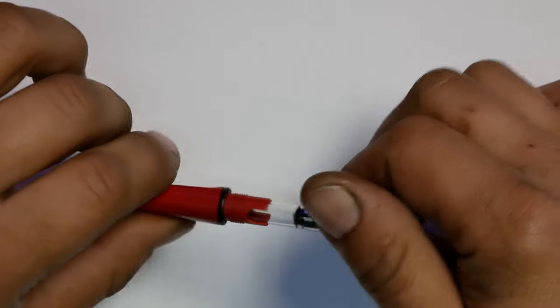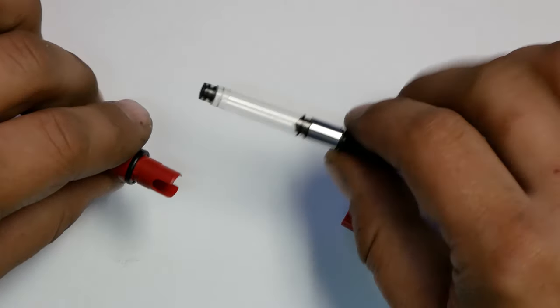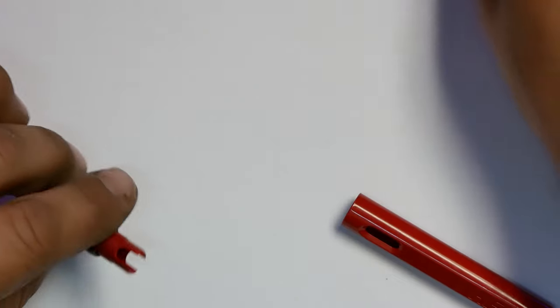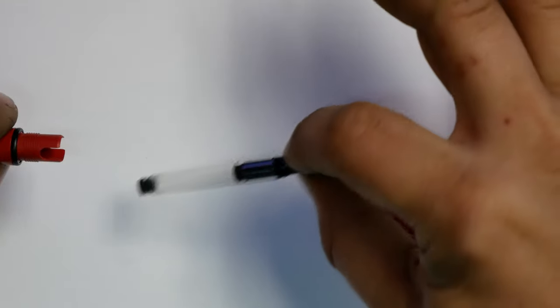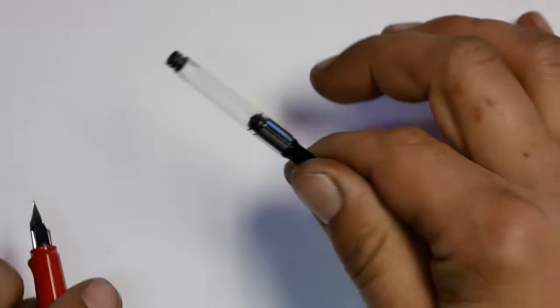Let's unscrew that. This has a converter. We're going to save the converter for some red ink. That's what we'll use that with. When I say converter, this is so you can use your own ink. So that's pretty cool. It came with that. I didn't realize that right away.